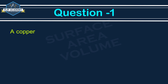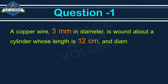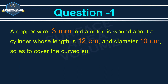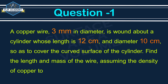A copper wire 3 mm in diameter is bound above the cylinder whose length is 12 cm and diameter 10 cm, so as to cover the curved surface of the cylinder. Find the length and mass of the wire assuming the density of copper to be 8.88 g per cm cube.